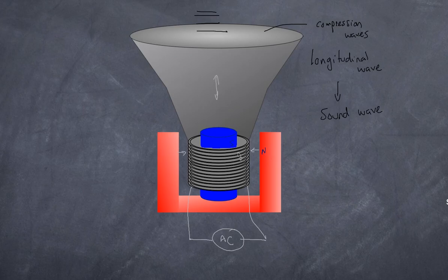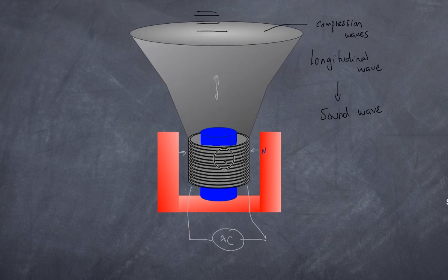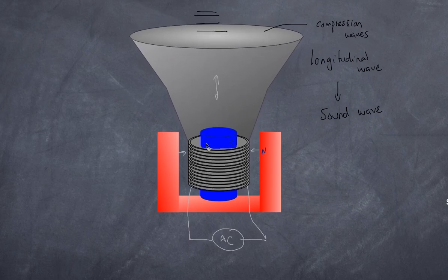In essence, what we have here is the motor effect being employed—that is, a current-bearing wire experiencing a force in a magnetic field. The current is alternating, which causes the whole cone to vibrate, thereby converting electrical energy into sound energy or kinetic energy producing sound. The frequency will determine the pitch of the sound you hear, and the amplitude of the alternating supply will determine the amplitude and therefore the loudness of the sound produced.